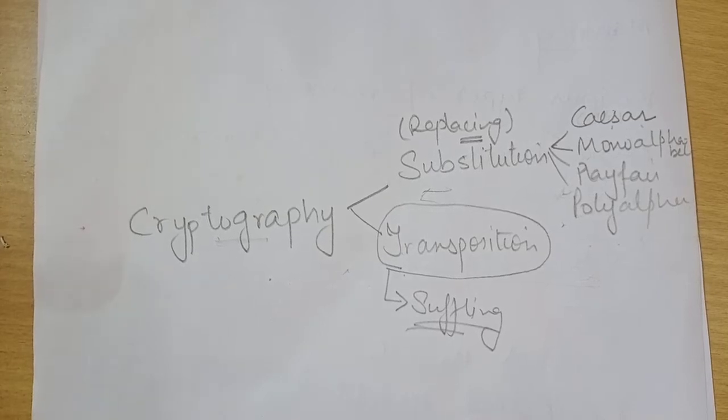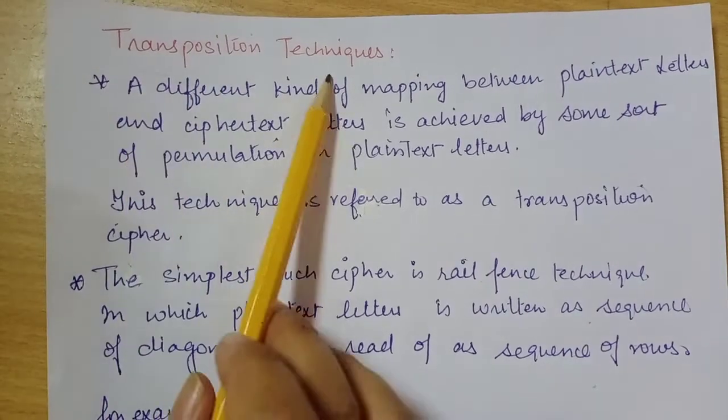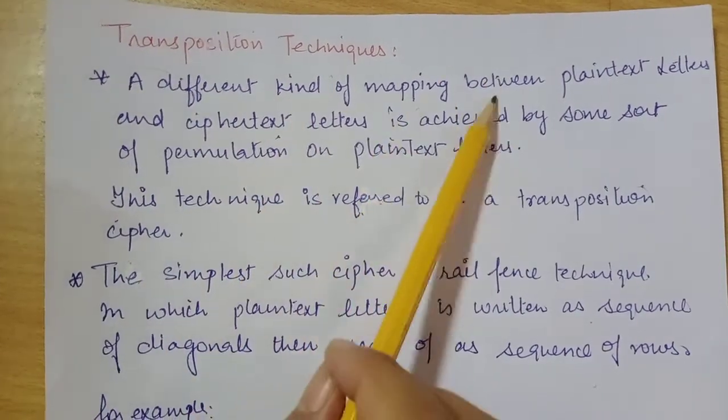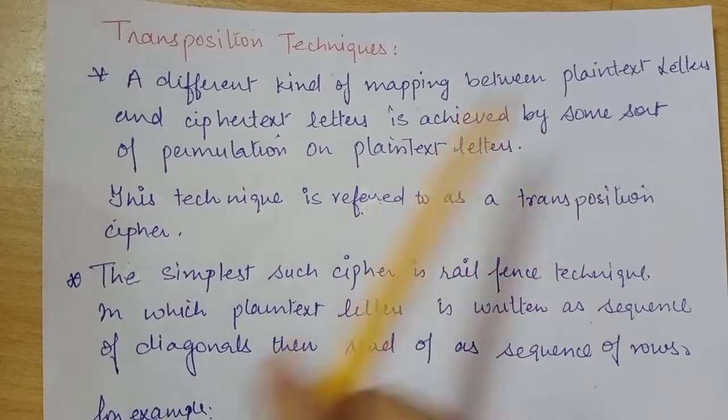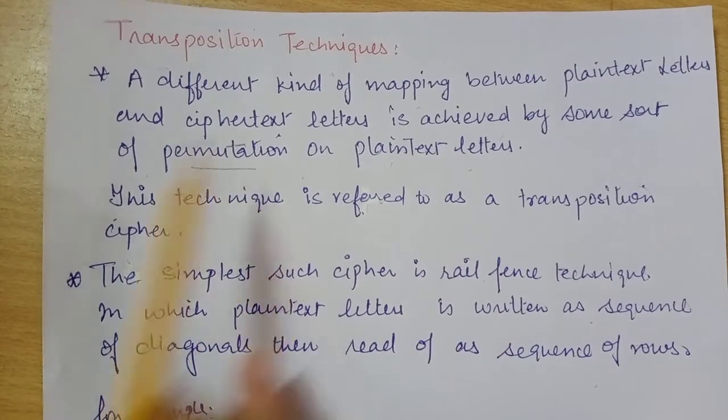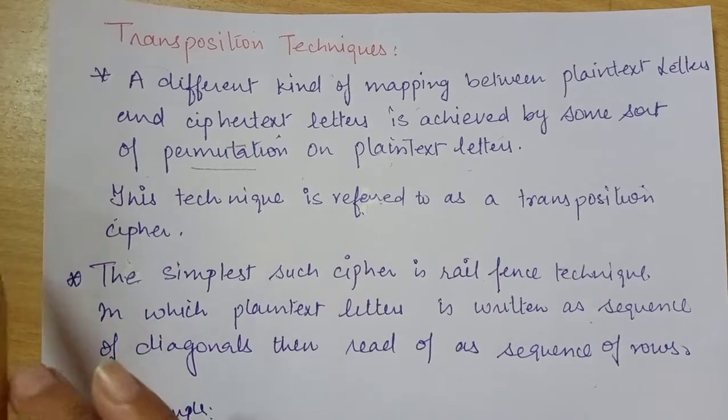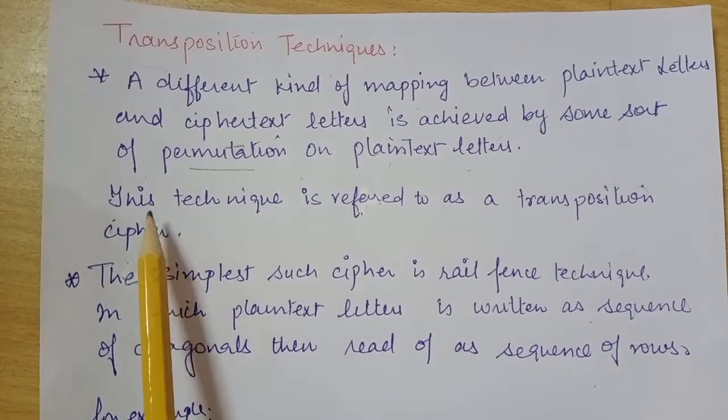So this is another way to convert the plain text into ciphertext and it is a very easy approach. In transposition techniques, a different kind of mapping between the plain text letters and the ciphertext letters is achieved by some sort of permutation on the plain text letters. What do you mean by permutation? Permutation means shuffling, like changing the places and not replacing.